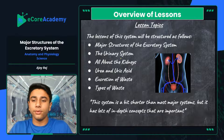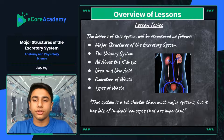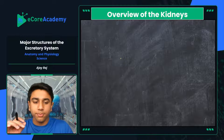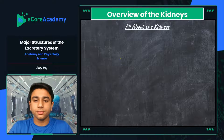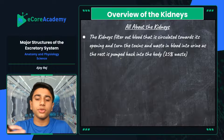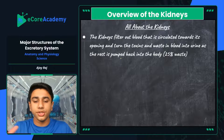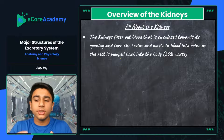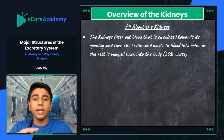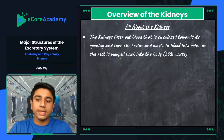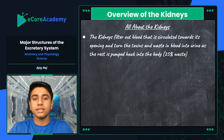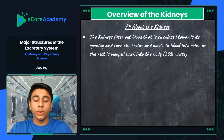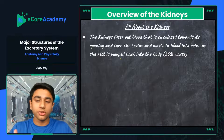Let's get into more specifics on the major structures. Starting with probably the most important organ within the excretory system — the kidneys. The kidneys filter out blood that is circulated towards them and turn the toxins, waste, and blood into urine, while the rest is pumped back into the body. The kidney is the main factory process of the entire excretory system, filtering essential nutrients circulated through the bloodstream, with blood entering and getting officially filtered out.